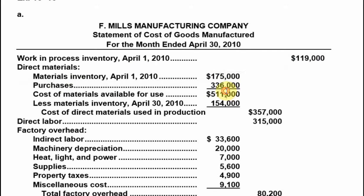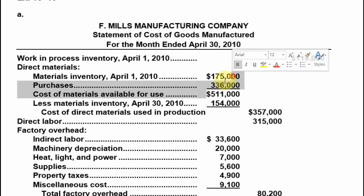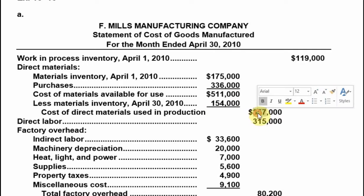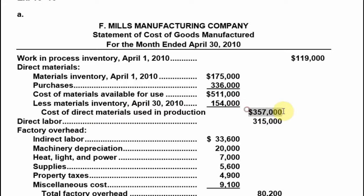To calculate direct material, we have material inventory at the beginning plus purchases. Adding these two numbers together, we get a total of five hundred eleven thousand. Then we subtract material inventory at the end, giving us three hundred fifty seven thousand for direct materials used.